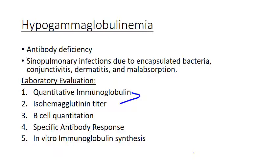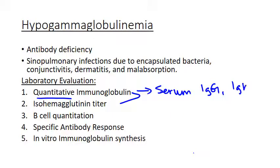Screening tests include a quantitative immunoglobulin test, which basically measures the serum level of the different isotypes — IgG, IgA, IgM, and sometimes IgE. This looks for normal values, which vary by age, so you would test based on the age of the patient.